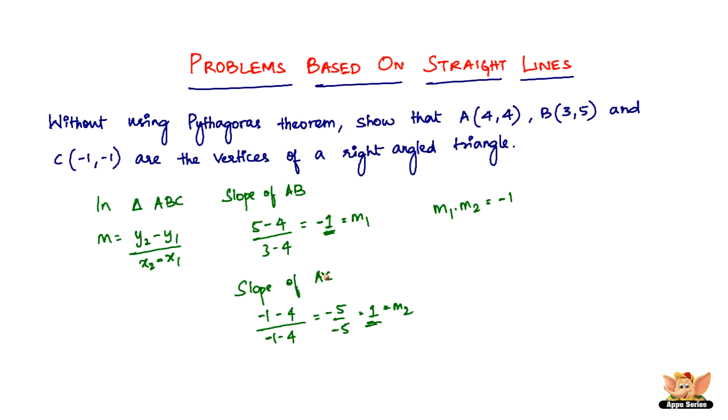And therefore, the given triangle or the given points are the vertices of a right-angled triangle. So this is how simple the problem is. All you have to do is just show that the product of the slopes of the two given lines are negative 1. And that's all you can prove that the given three points are definitely the vertices of a right-angled triangle. That ends this problem as well as this video. I'll see you in the forthcoming videos with more problems based on straight lines.